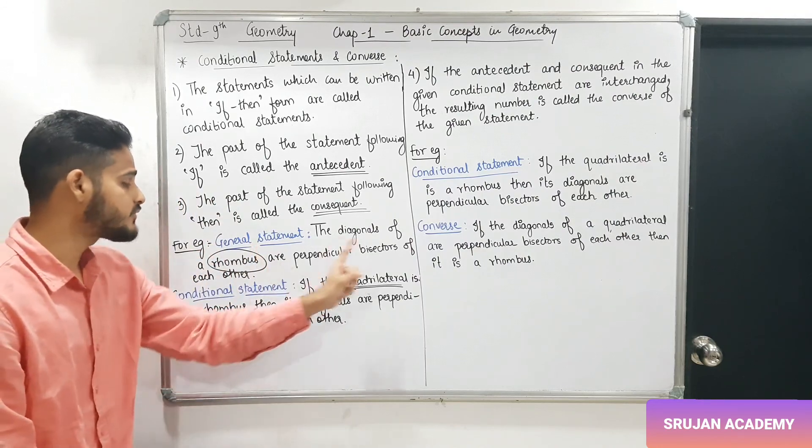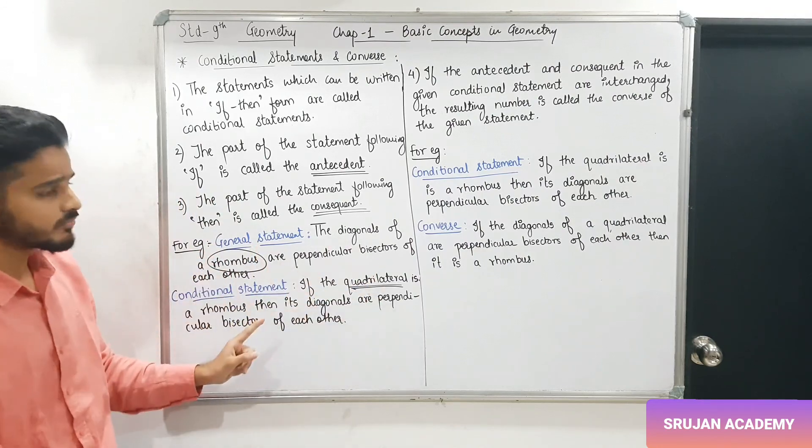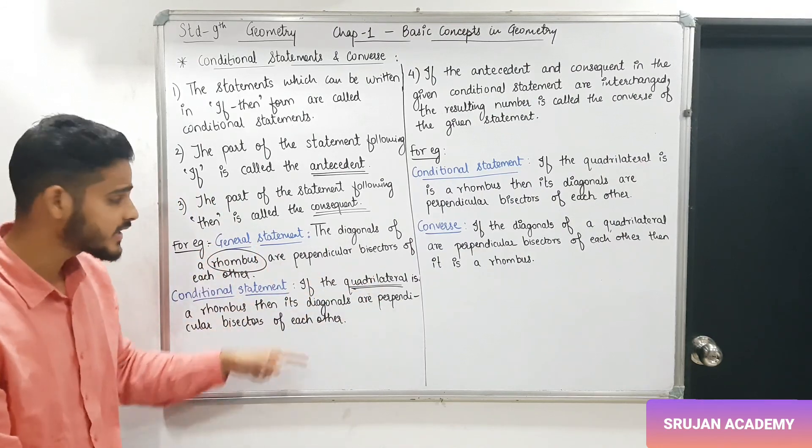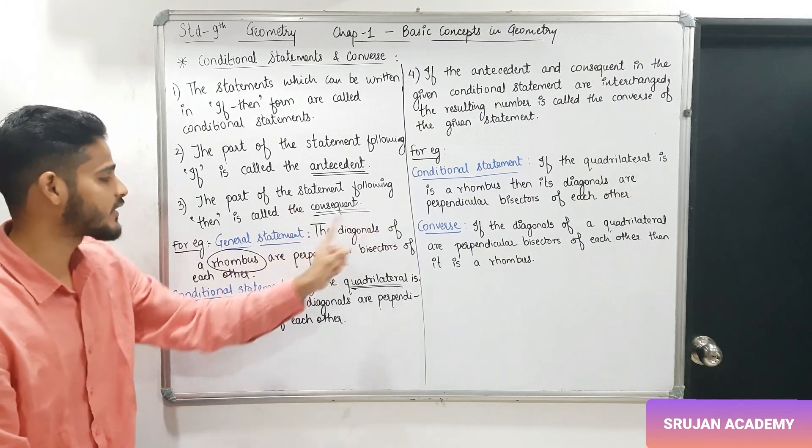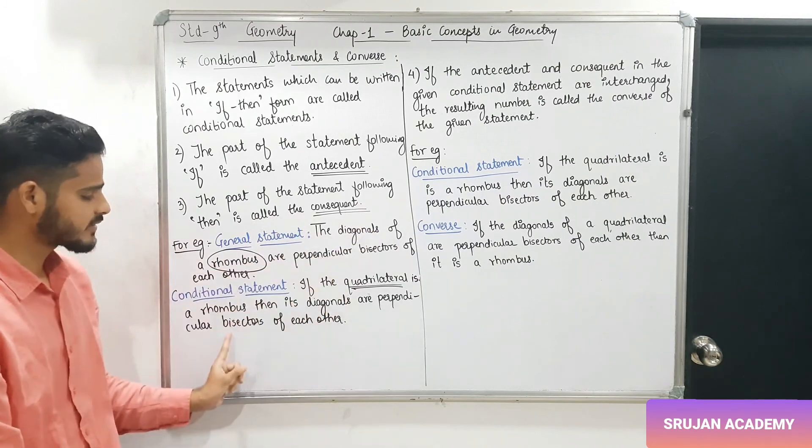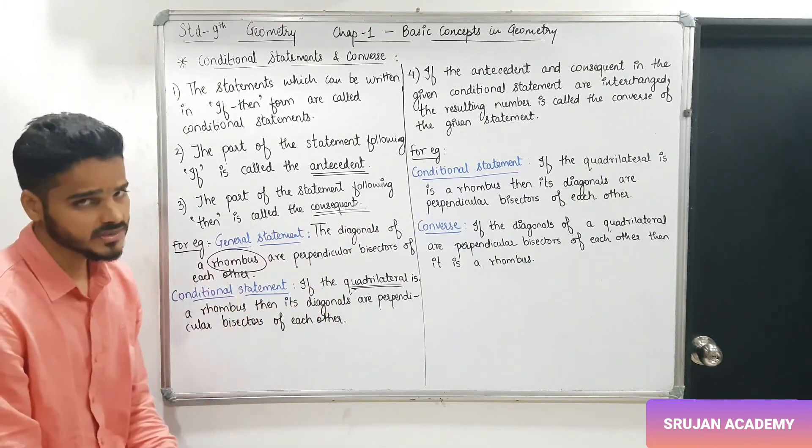If the quadrilateral is a rhombus, then its diagonals are perpendicular bisectors of each other.